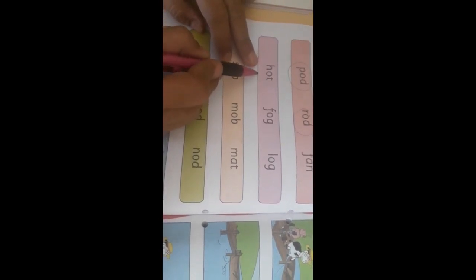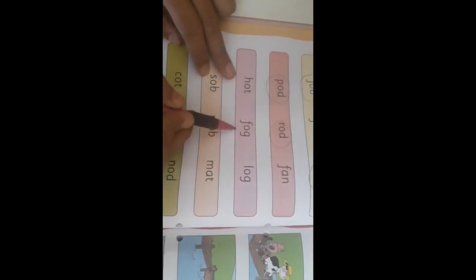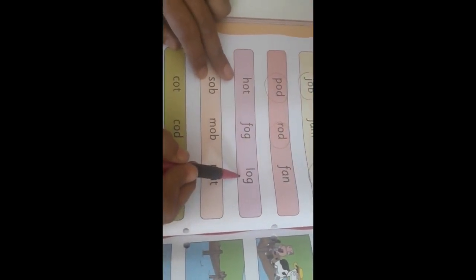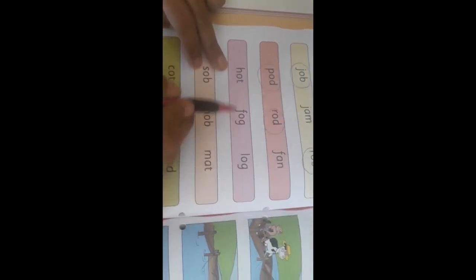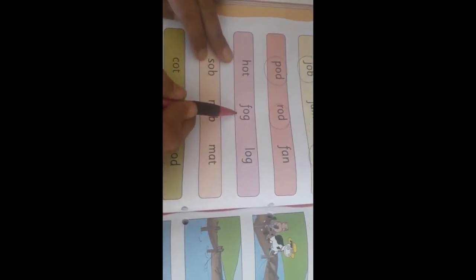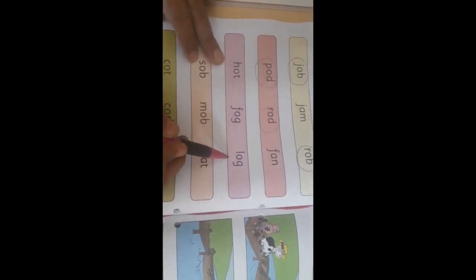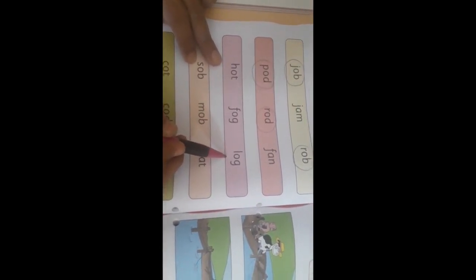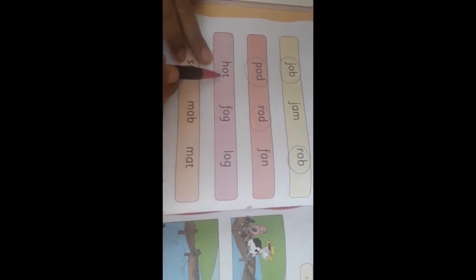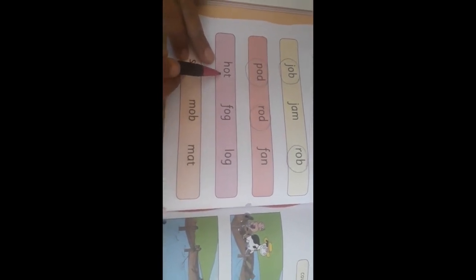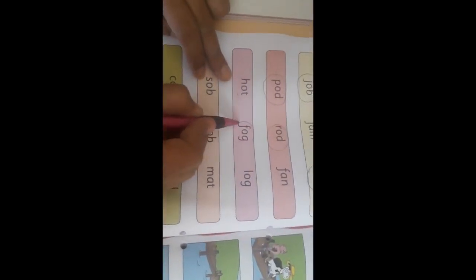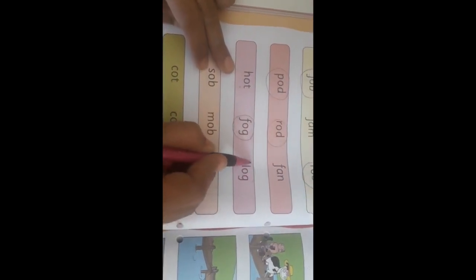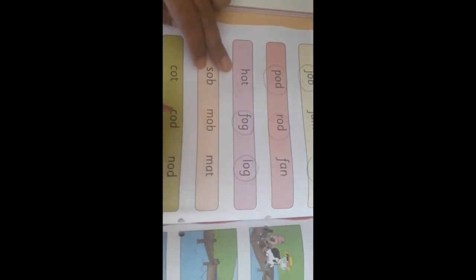Now here hot, fog, log. Now tell me which words are rhyming? Hot, fog, log. Here it is T. Here the sound which is different is T. So here fog and log are rhyming. So fog and log we are going to circle.